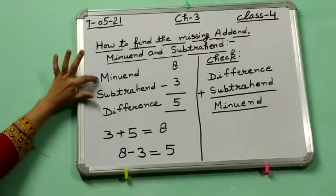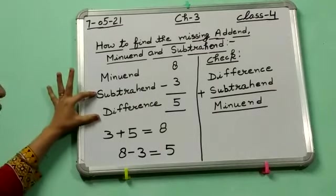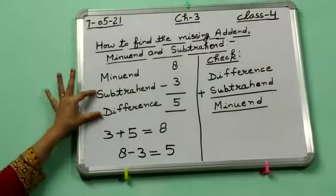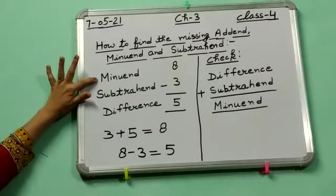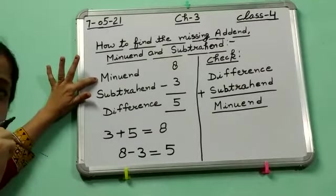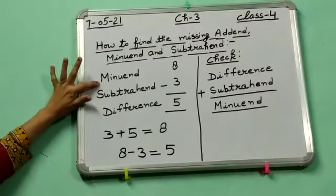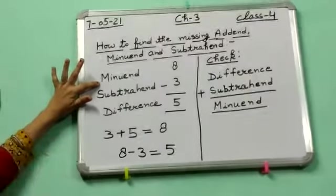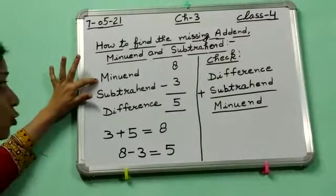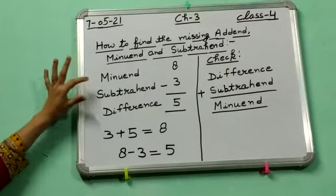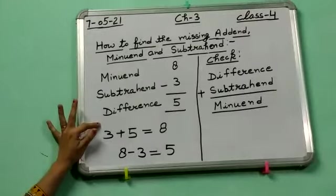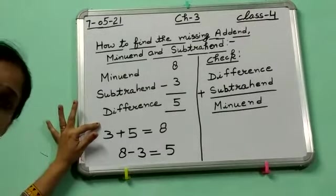In the same way, if you have to find the minuend and these two are given to you, then you have to add these both. Because minuend is the greater number from which we have to subtract. So what do we have to do to find the minuend? We have to add subtrahend and the difference. Understood all of you?